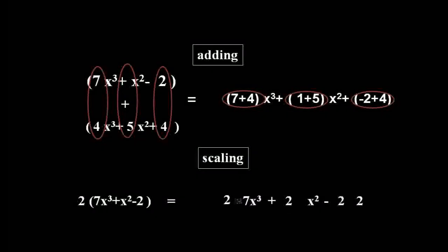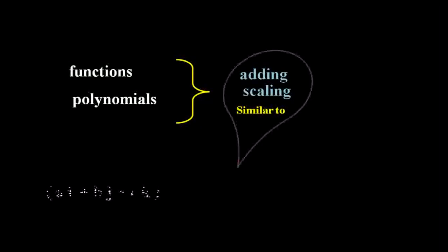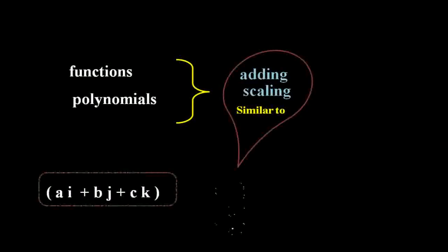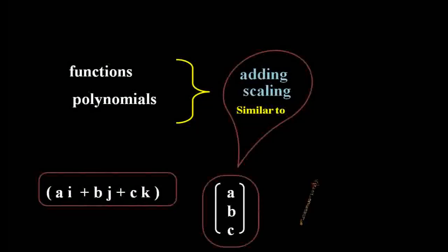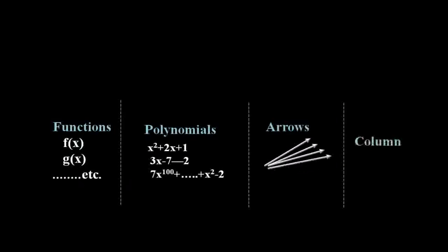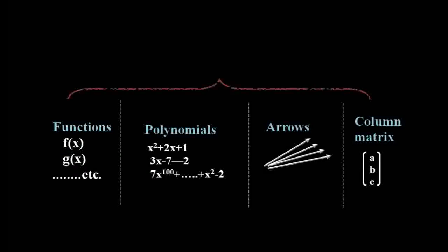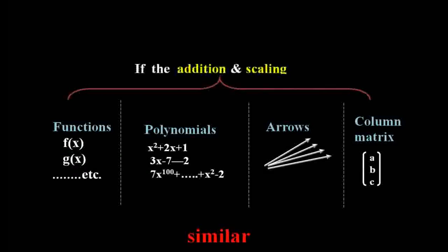As a result, functions and polynomials have the same addition and scaling properties as vectors. So if functions, polynomials, arrows, and column matrices are all added and scaled in the same way, then are all of these vectors?